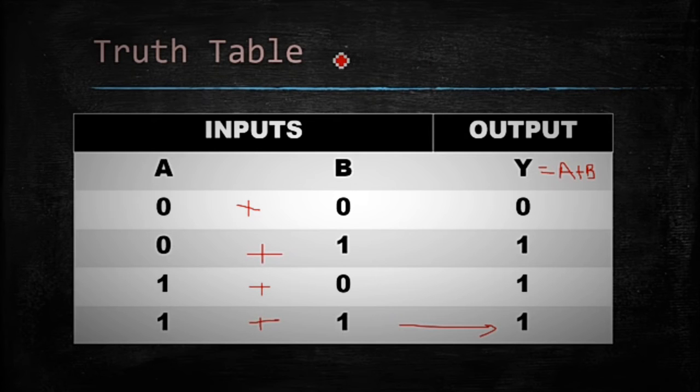Okay guys, now these are the combinations 1, 2, 3 and 4. As we discussed earlier, 2 raised to power N number of combinations. N is number of inputs. Inputs A and B, there are two inputs. Then possible combinations are 4. That is why these are 4.